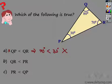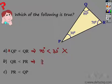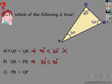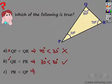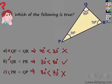Let's check option B: QR is less than PR. If this is true, then angle opposite to QR should be less than angle opposite to PR. Angle opposite to QR is 30°, and angle opposite to PR is 80°. Is 30° less than 80°? Yes — correct. So option B is true. Let's verify option C: PR is less than QP. That would require angle opposite to PR (80°) to be less than angle opposite to QP (70°). Is 80° less than 70°? No. So option C is incorrect.